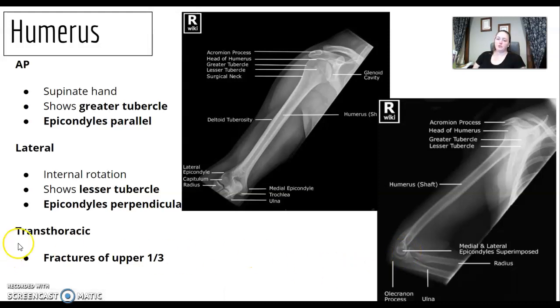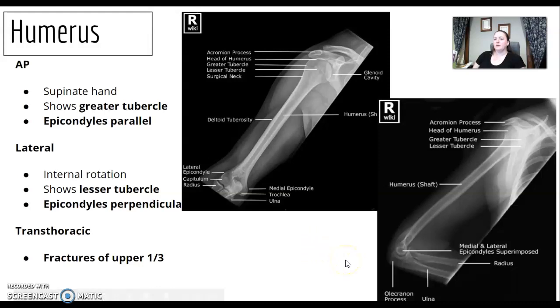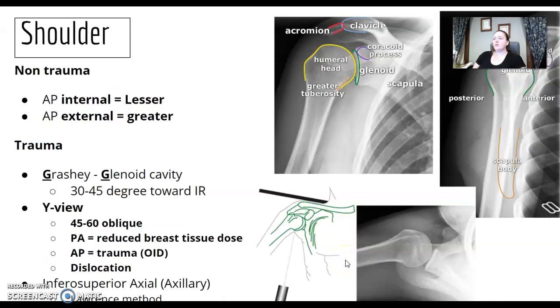When would you use a transthoracic humerus? For a fracture of the upper third of the humerus. You'd probably use a breathing technique to do that.